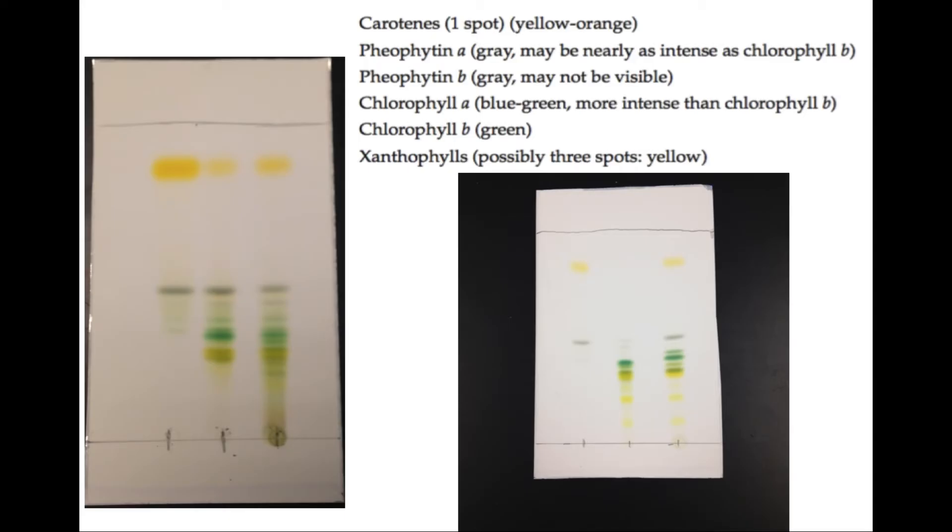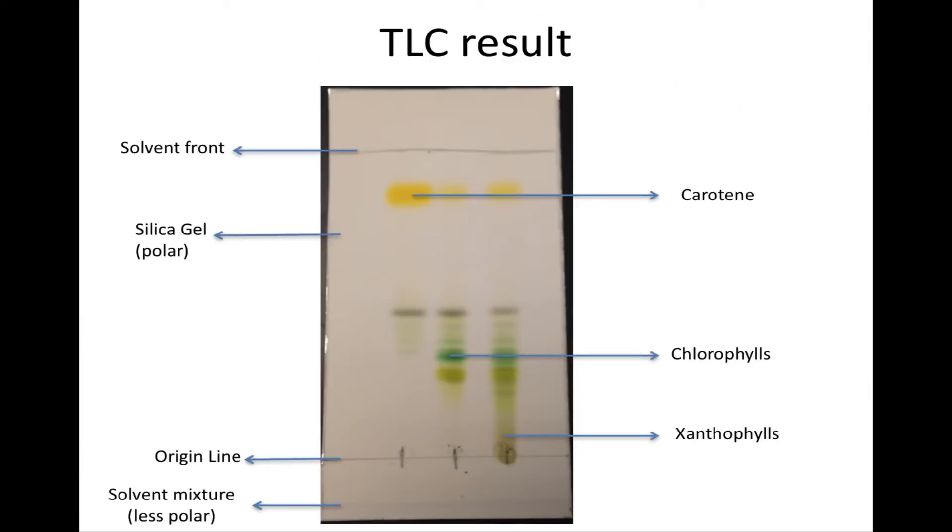This is an example of the TLC result of the spinach pigments. The spot on the right is a complete spectrum of the spinach pigments. The list of the complete spinach pigments components can be found in your manual on page 129.